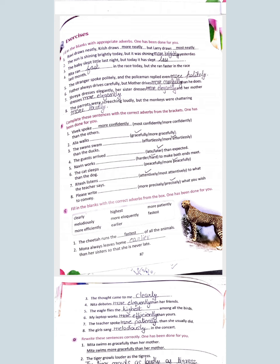When comparing more than two, we use 'most.' Next example: 'The sun is shining brightly today. It was shining [blank] yesterday.' We are comparing today with yesterday, so the answer is 'more brightly' — yesterday it was shining more brightly. For the next exercise, 'Alia walks [blank]' — we are talking about a single person, not comparing two, so we use the positive degree: 'Alia walks gracefully.'